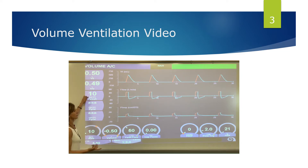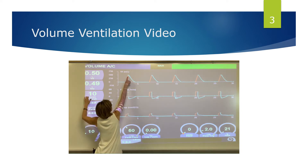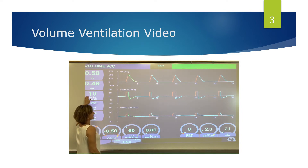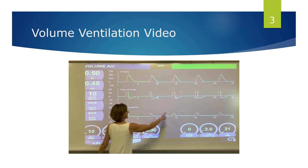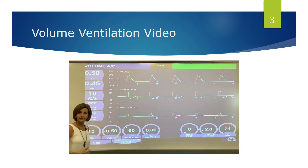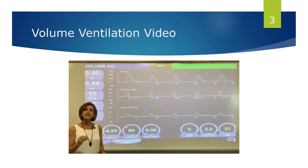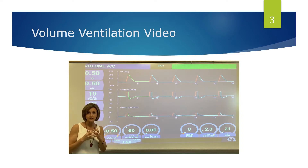Looking at our graphics display: we're pushing 500 mL in, it's coming out on exhalation, and it's taking a peak inspiratory pressure of about 10 centimeters of water for that volume to be pushed in. Now I'm going to change the compliance of the lung — I'm going to decrease lung compliance, making the lungs stiffer.